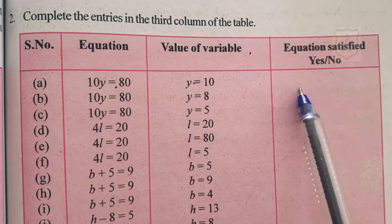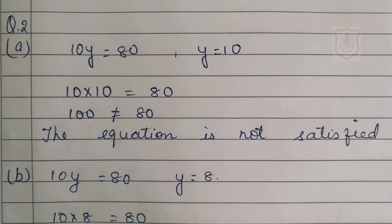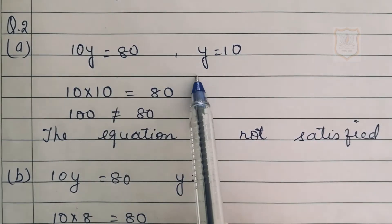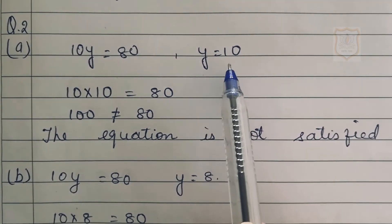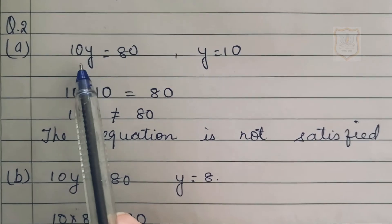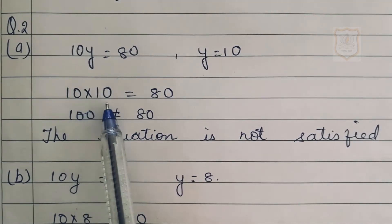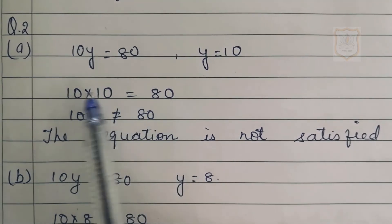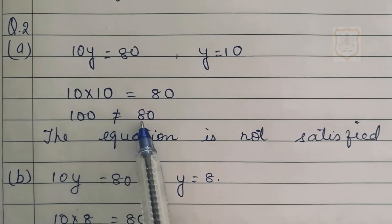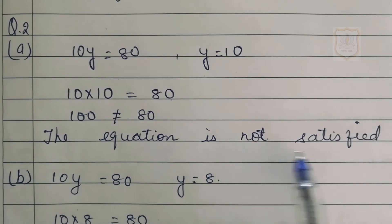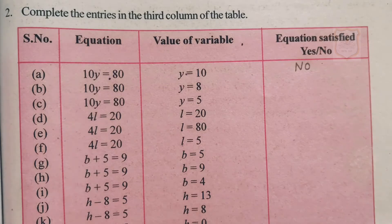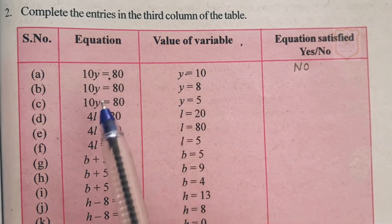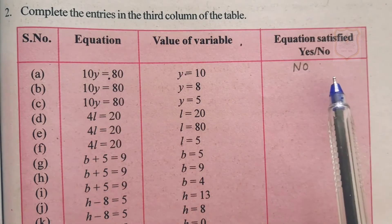We have to state whether the equation is satisfied or not. Solution for part A: 10y equals 80, where the value of variable y is 10. We substitute 10 in place of y, so 10 multiplied by 10 equals 80. But 10 times 10 is 100, and 100 is not equal to 80. Therefore, the equation is not satisfied. If the value of y is 10, then 10y will not equal 80 — answer is no.